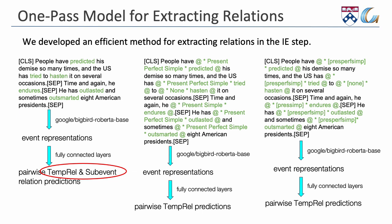we encode the whole document generated by GPT using BigBird-RoBERTa-Base, and obtain contextualized representations for each event. We then use fully connected layers to predict the relations for each pair of events in the texts. Our supervision for sub-event and temporal relations comes from the Haiv and Mattress datasets.